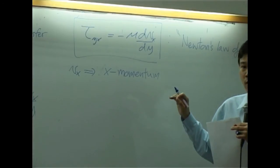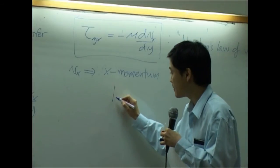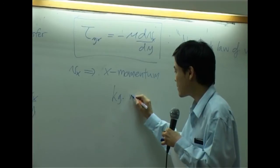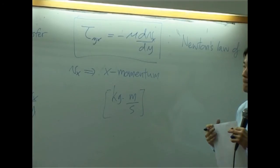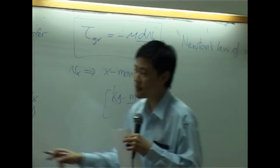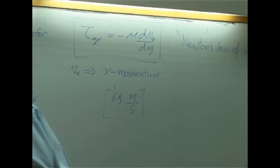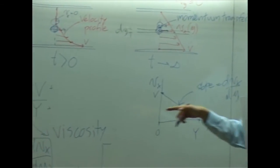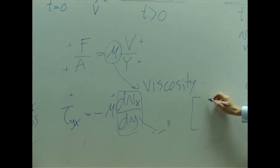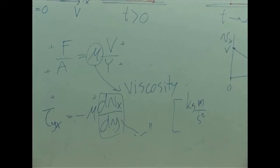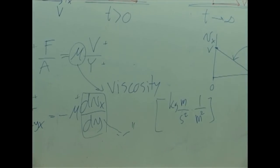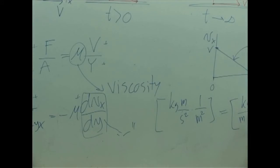And momentum should have the unit of what? The unit of momentum is mv — mass times velocity. This is the unit of momentum. What about the unit of tau? Tau should have the unit of force per area. The unit of force is Newton, which is kilogram meter per second squared. And then you divide it by area — meter squared. As a result, you get kilogram per meter per second squared.